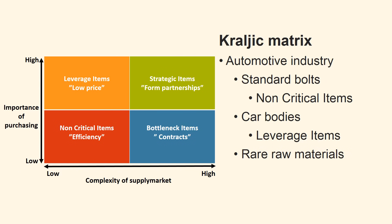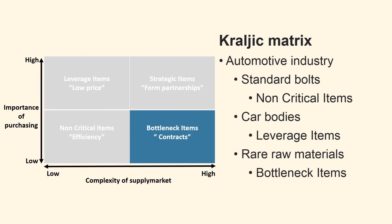The car includes a theft protection system with GPS which contains rare raw materials. It represents a very small value of the system and there are few providers of rare raw materials and their supplies are unstable. The rare raw materials are a bottleneck item. Suppliers' delivery is unreliable and the rare raw materials have a relatively low impact on the financial results. We will therefore try to tie the selected suppliers up with contracts and, as an extra security, keep stocks.